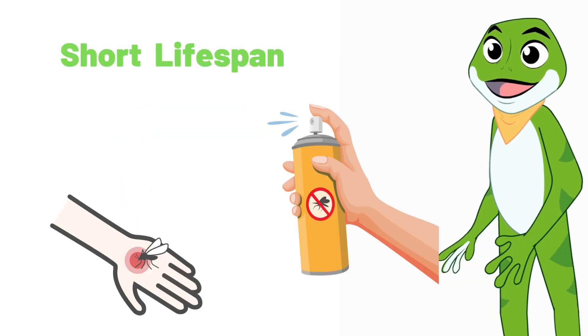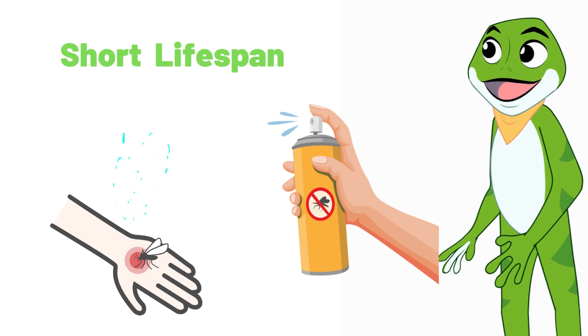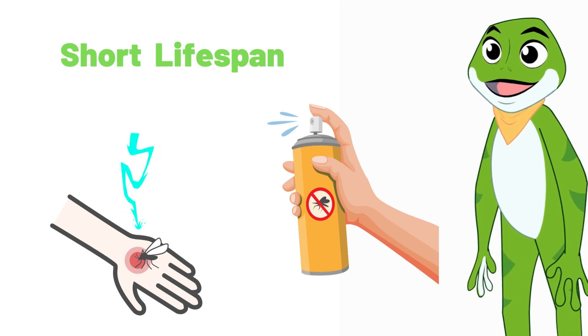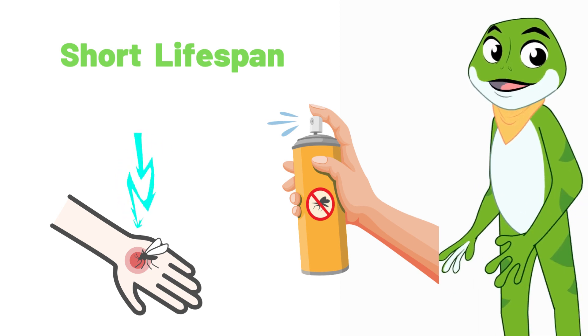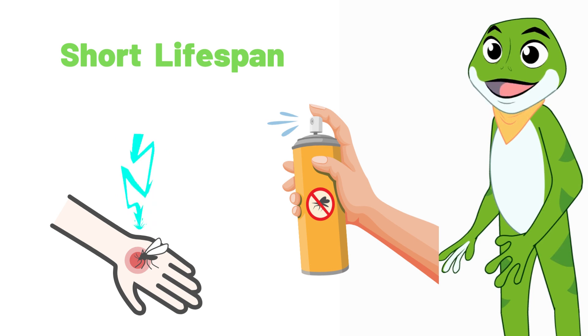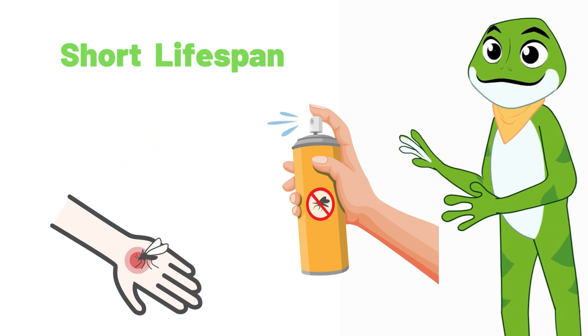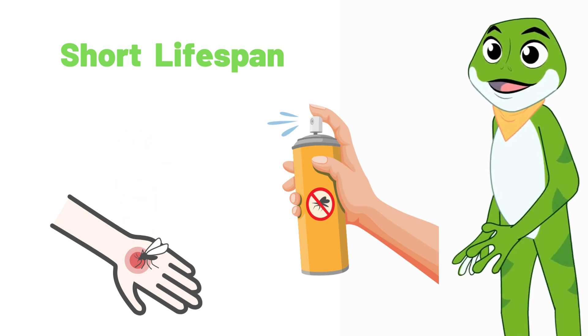Mosquitoes have a short lifespan, usually less than a month. However, they can produce many offspring in a short time, which makes them a significant health hazard as they can transmit diseases.